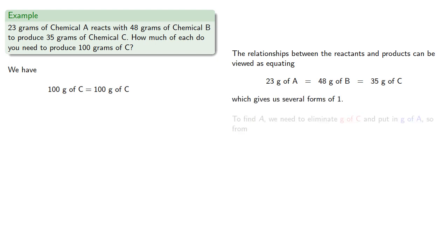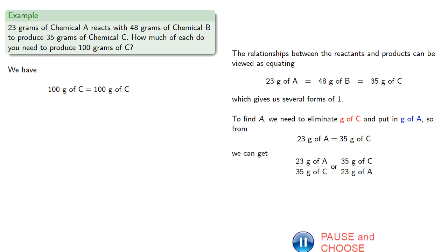To find A, we need to eliminate grams of C and put in grams of A. From that equality, 23 g of A is the same as 35 g of C. We can get two forms of 1, and we'll use the one that eliminates grams of C. Our amount will be approximately 65.71 g of A.